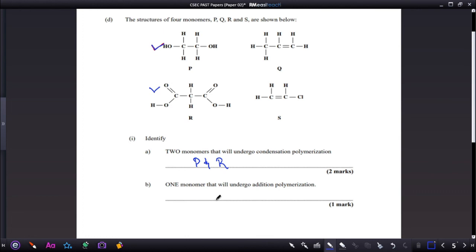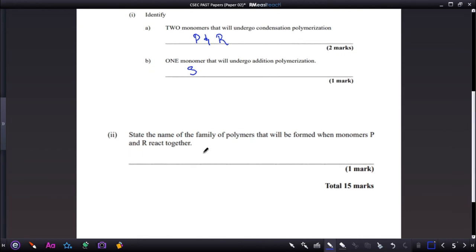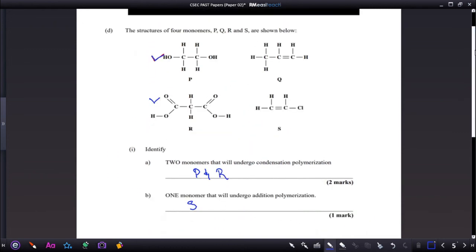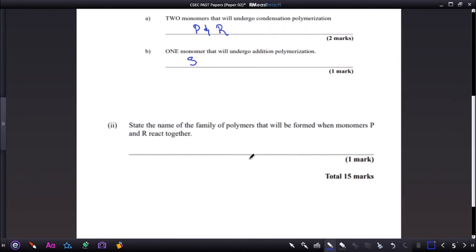Part B: one monomer that will undergo addition polymerization. We can pick anyone from Q or S. Let us pick S, which is vinyl chloride or chloroethene. Lastly, question two: state the name of the family of polymers that will form when monomers P and R react. Let us look at what P and R are. P is an alcohol, a diol. P is a diol and R is a diacid. The chemical properties or the principle remains the same in terms of their reaction. An alcohol reacting with an acid produces an ester. If an ester is produced, then the family of polymers that it belongs to is polyester.